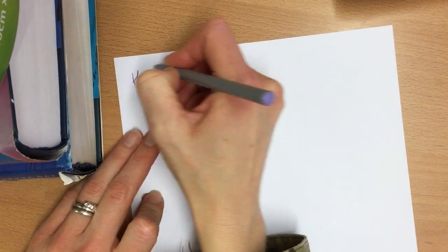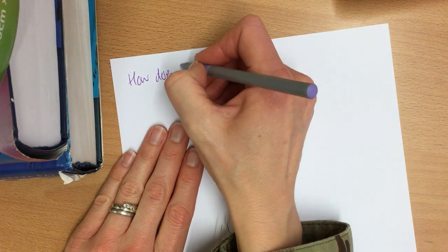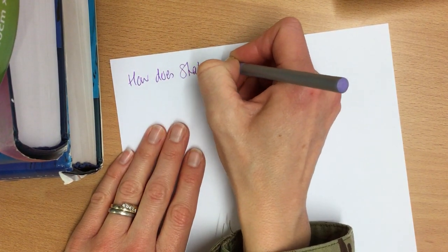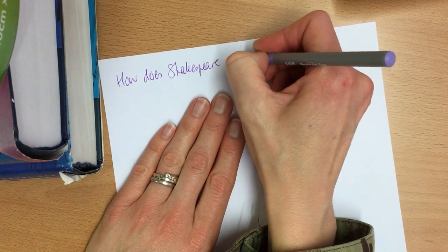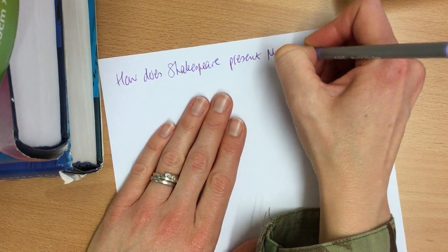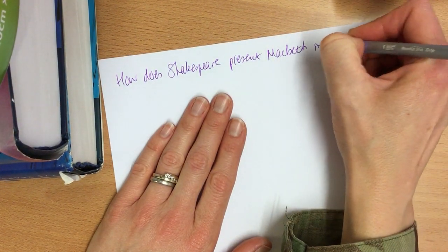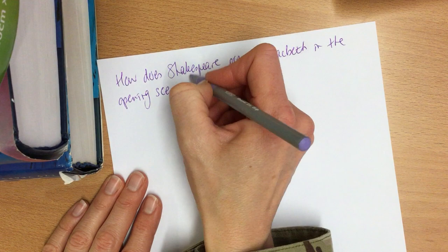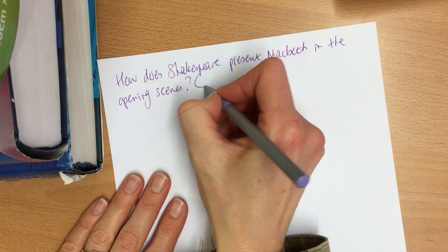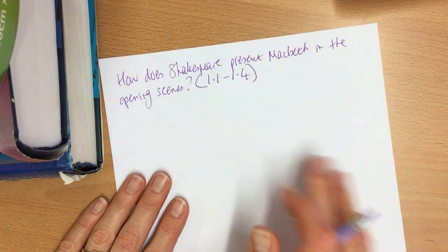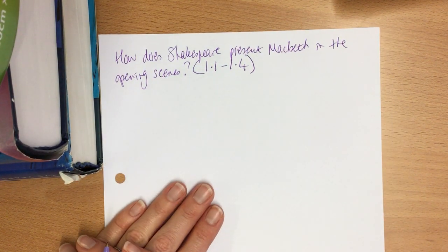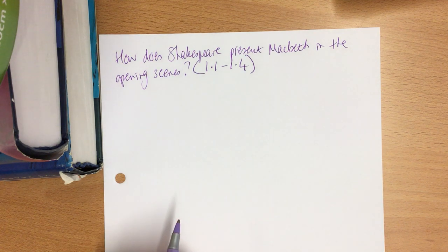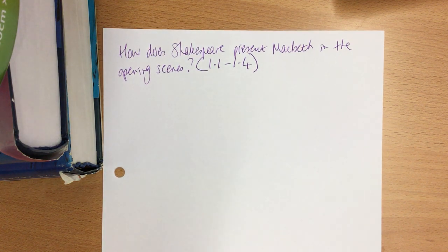Okay, so how does Shakespeare — let's keep this nice and simple — present Macbeth in the opening scenes? I'm going to put brackets 1.1 to 1.4 because that's what we've done. So jot that down. We're going to kind of annotate around this, so make sure you've got lots of space available to you.